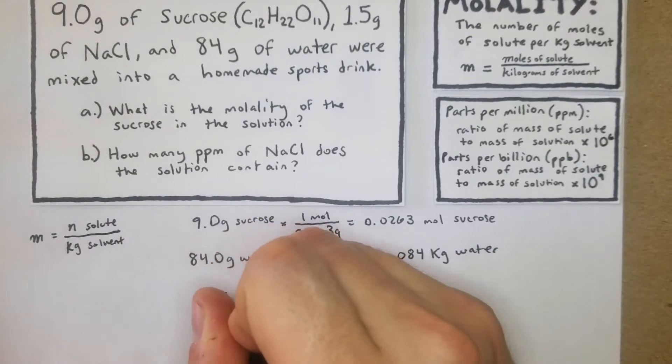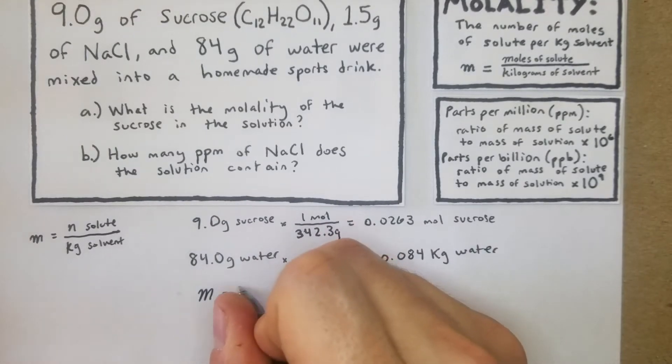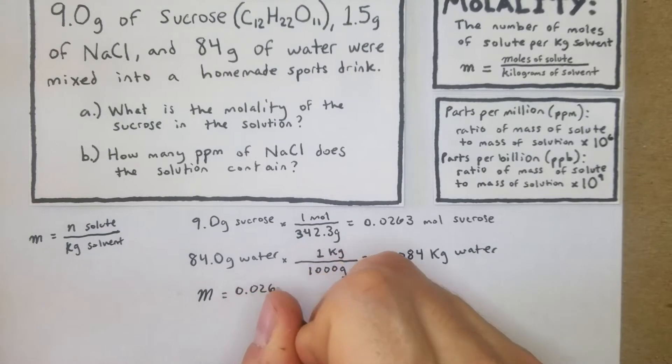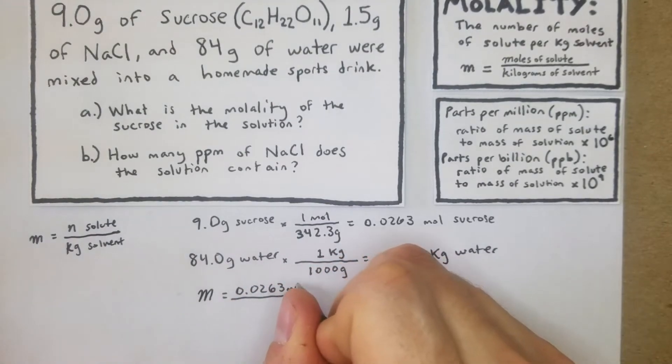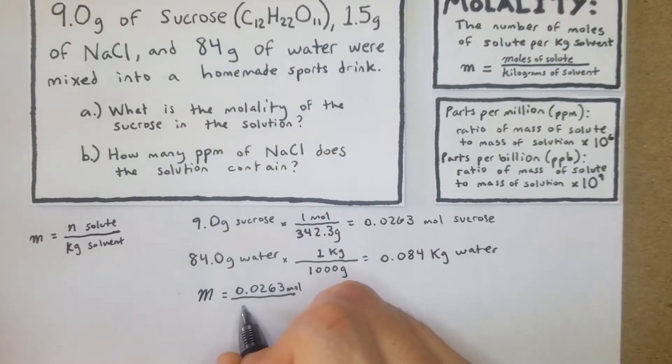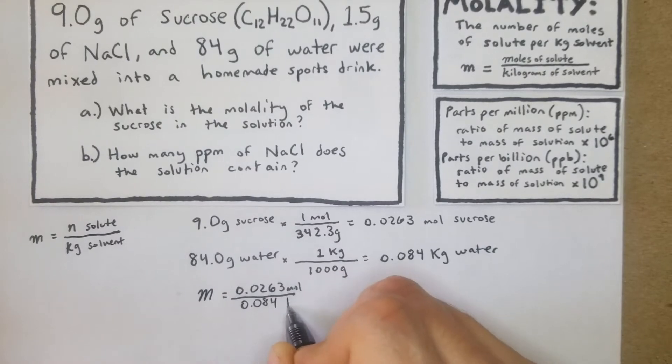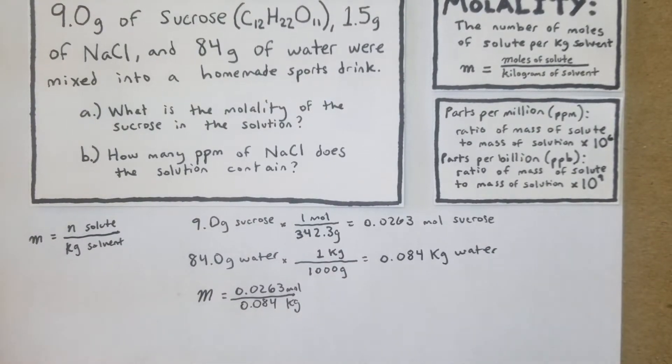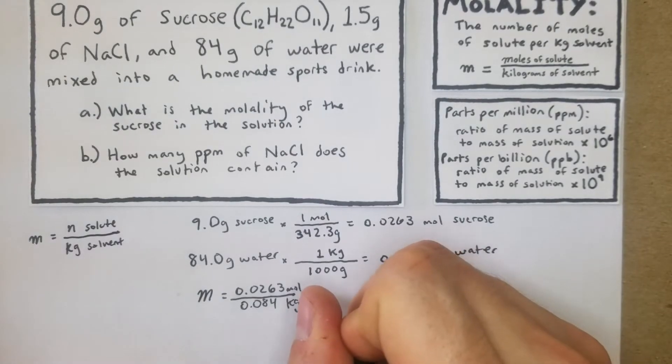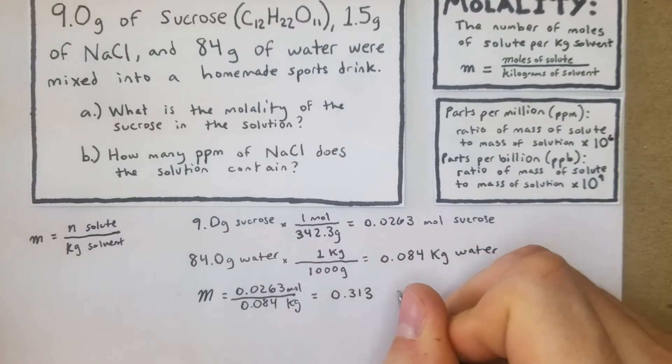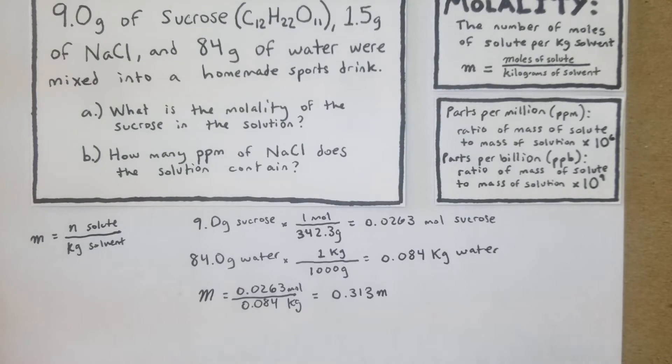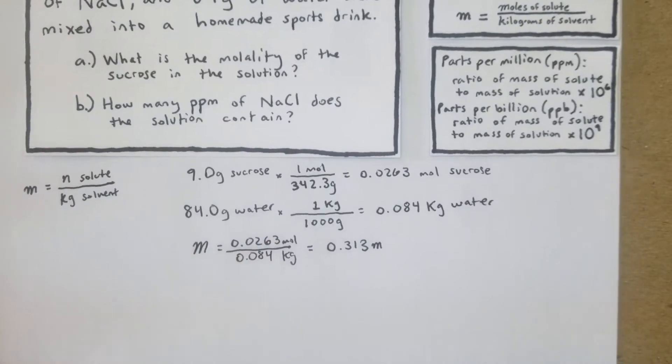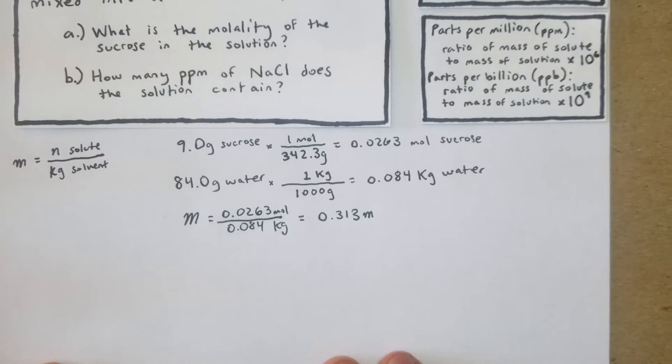Now for part a, molality is going to equal 0.0263 over 0.084 kg. That equals 0.313, and the units are a small m, molal. That's the way those go.